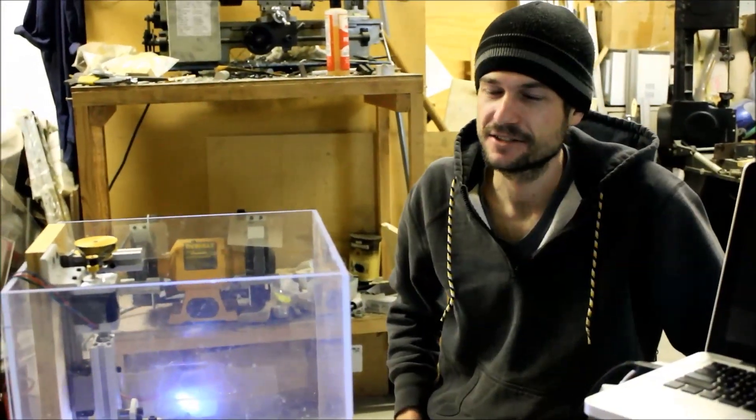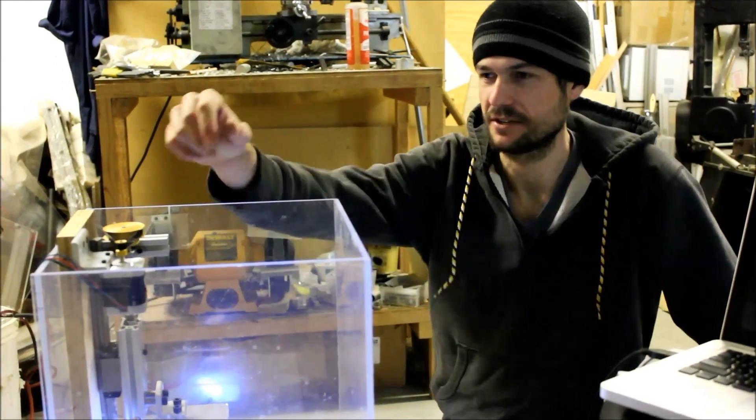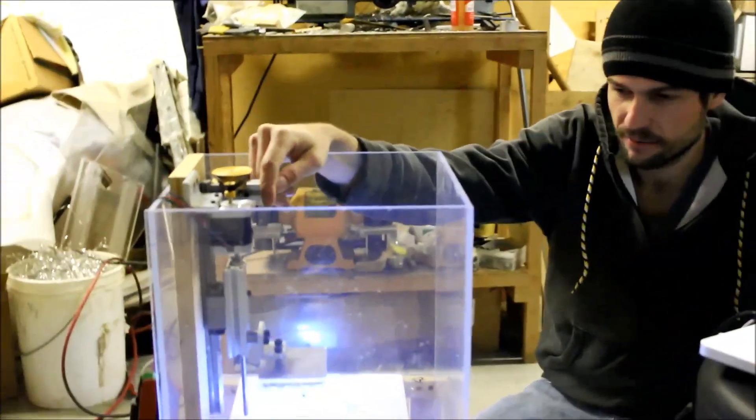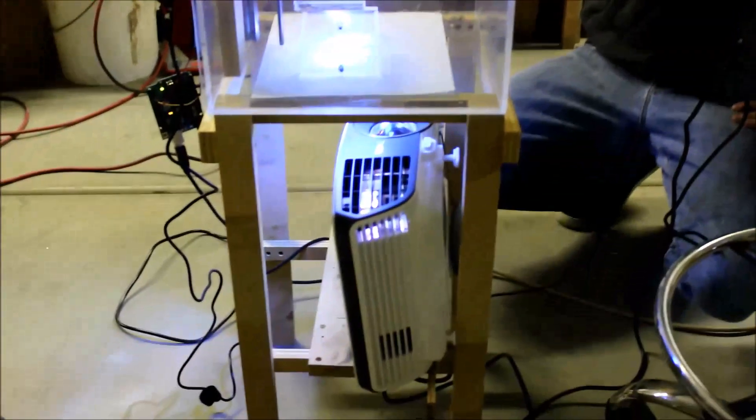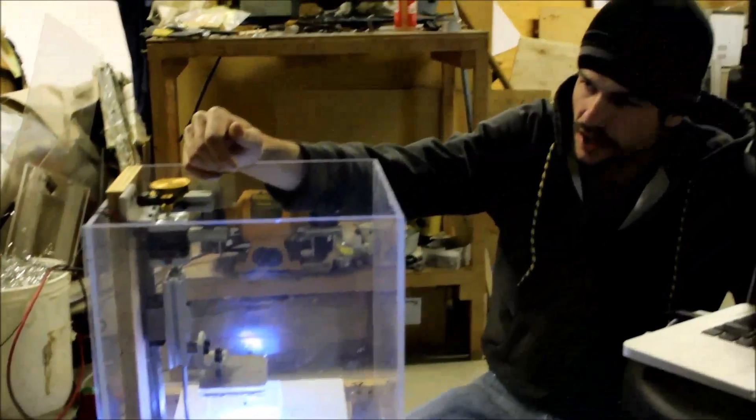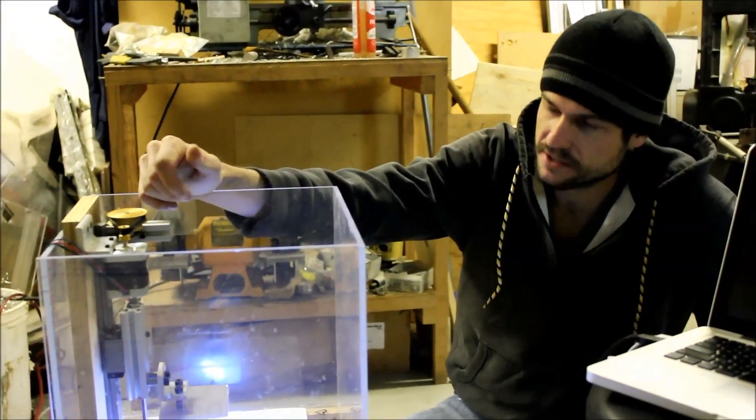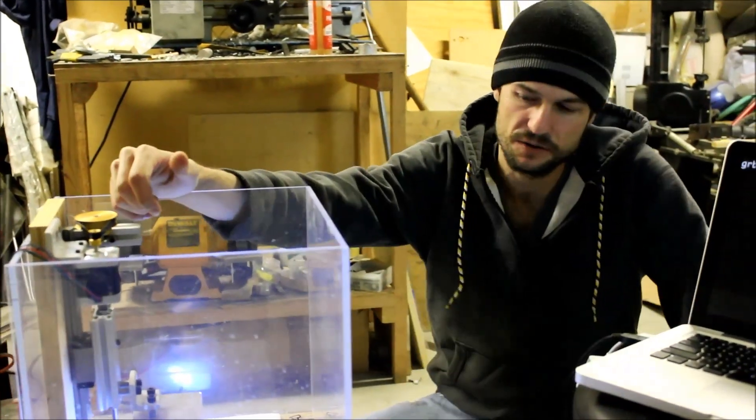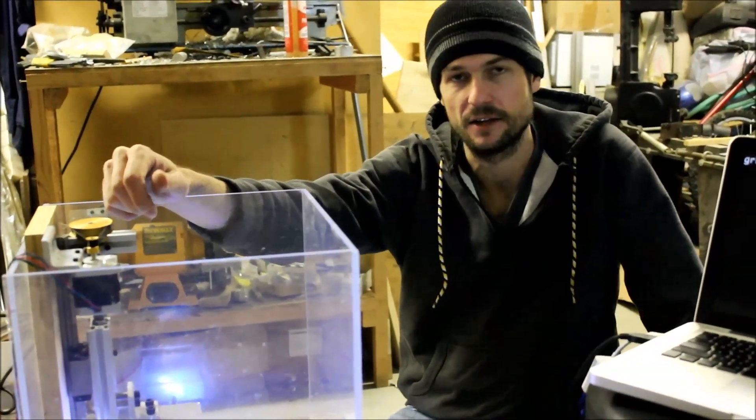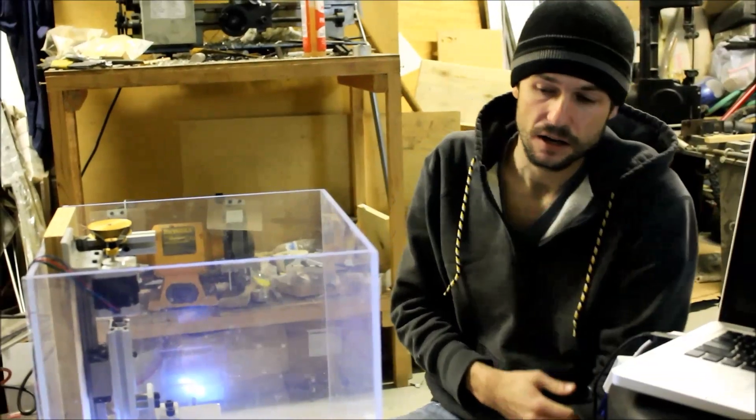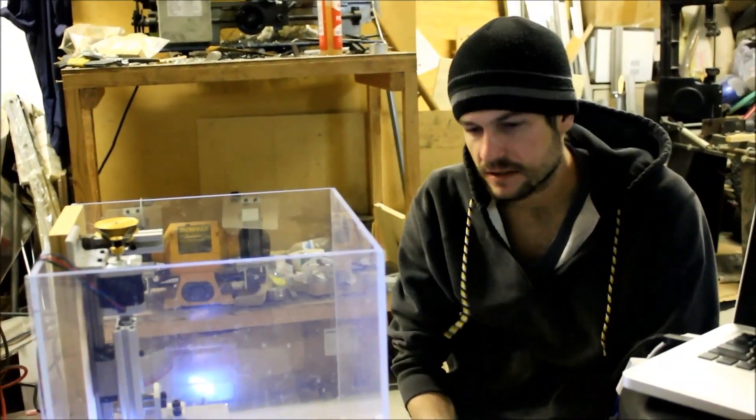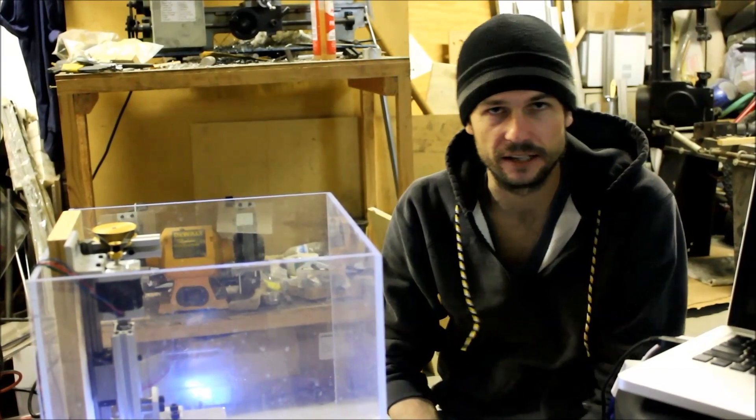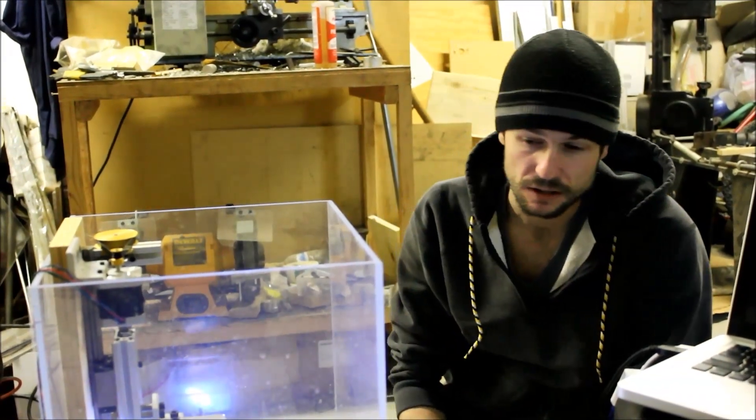So quite a while ago I built this old piece of technology and some software and JavaScript to control it. Basically the idea is that it's a 3D printer and it uses UV curable resin and a DLP projector to cure it. So basically how this works is we take an STL like off of Thingiverse or something that you model in SketchUp or some other 3D modeling program.